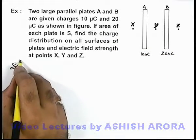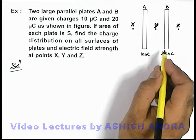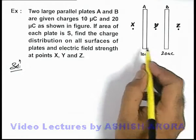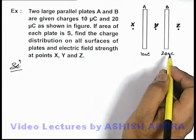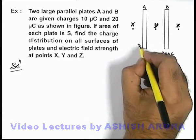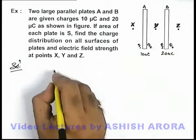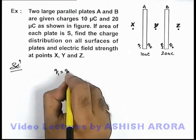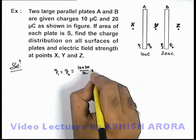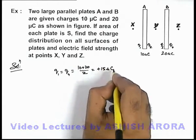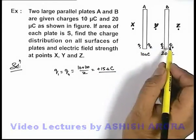In this situation, we know well that in a system of parallel large plates, the charge distribution is such that on the outer surfaces the charges are equal, and that is half of the total magnitude of the charge. So if the distribution of charges are Q1, Q2, Q3, and Q4, then Q1 is equal to Q4 is equal to (10 + 20) / 2 = +15 micro coulomb. These are the charges distributed on the outer surfaces of both plates.